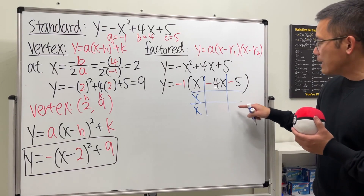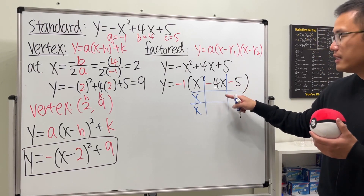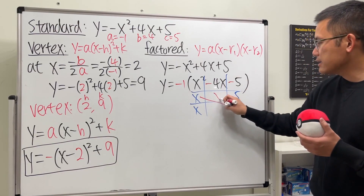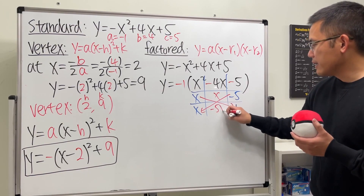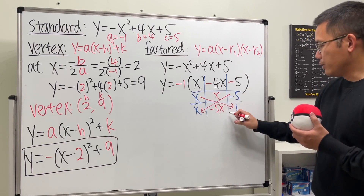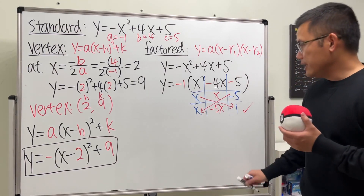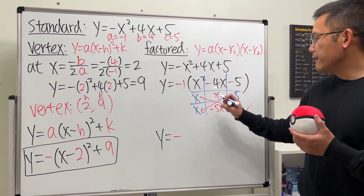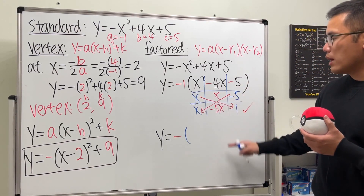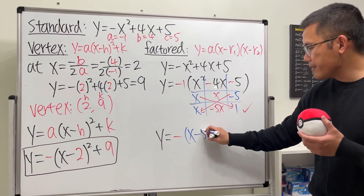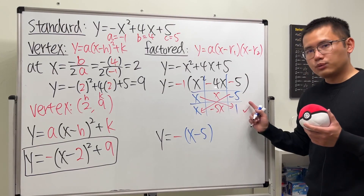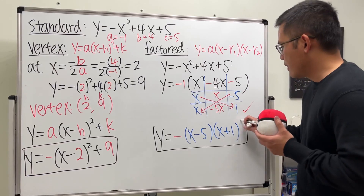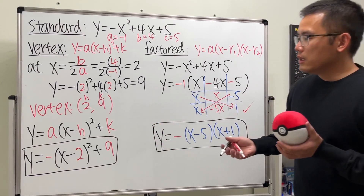Now we factor x squared minus 4x minus 5. What numbers multiply to negative 5 and add to negative 4? That's negative 5 and positive 1. Checking: x times x gives x squared, and the cross terms give negative 5x plus x equals negative 4x. So y equals negative (x minus 5)(x plus 1).